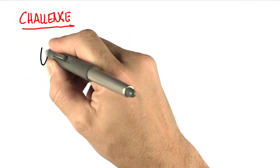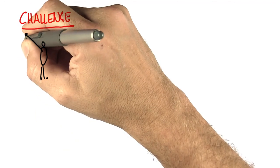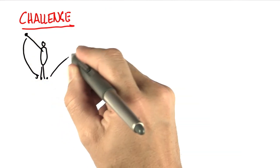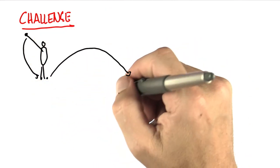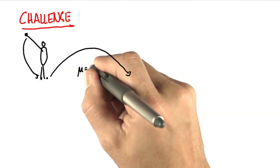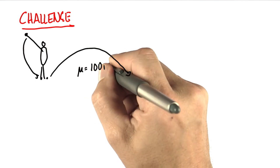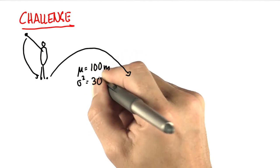So here's another challenge. This time you're a golf player. You hit the ball really hard, it goes flying, and it lands with some uncertainty, that's Gaussian, where the distance and expectation is 100 meters, and your variance is 30 meters squared.